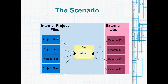It might look something like this: you've got a bunch of internal project files that the local team is working on, here's your Car class in the middle, and all of the internal project files and programmers are free to write code that changes the int fuel — as well as the external programmers. They may be in different countries, developing different DLLs. So they're all changing the fuel variable.